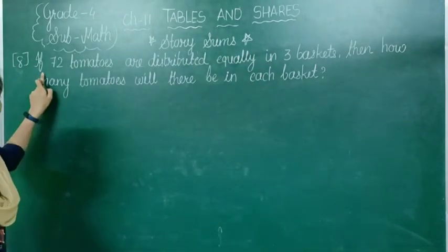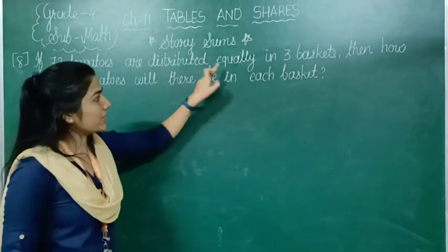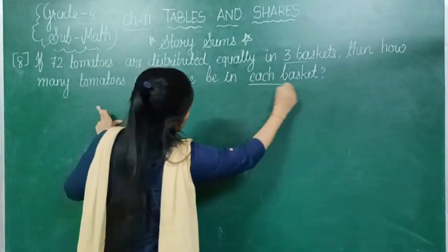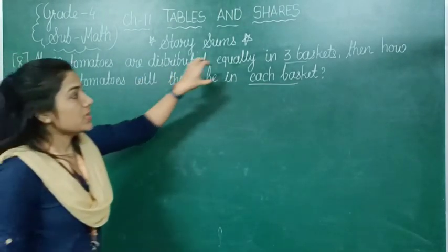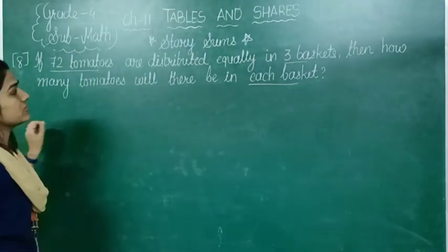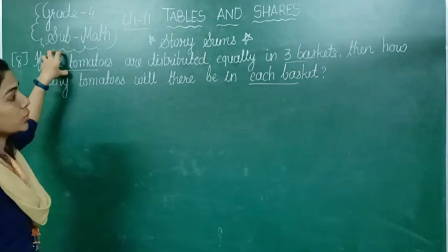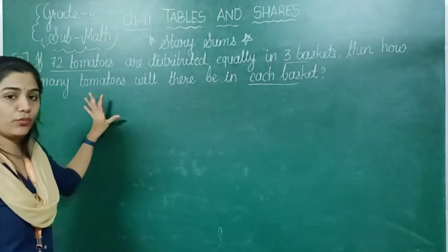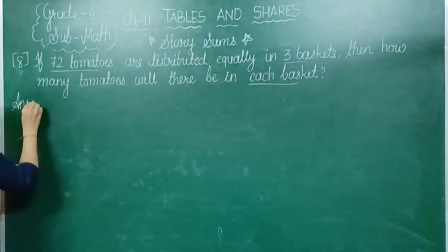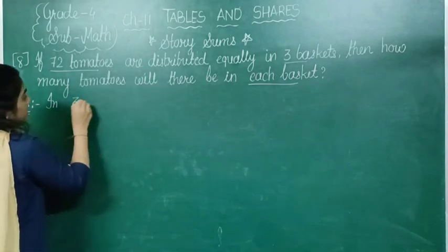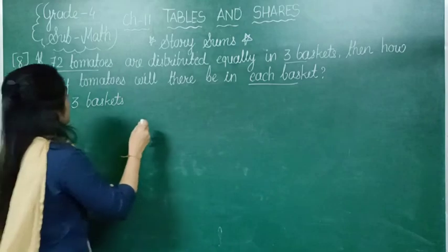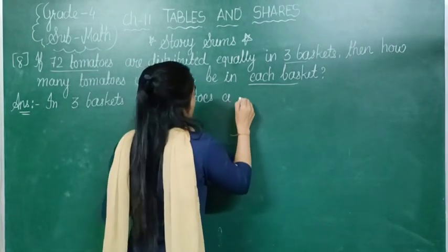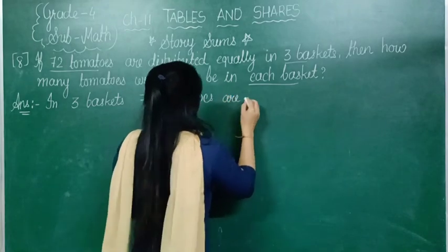Now we move to question number 8. If 72 tomatoes are distributed equally in 3 baskets, then how many tomatoes will be there in each basket? In this question, 72 tomatoes are distributed in 3 baskets, and we need to find how many tomatoes are in 1 basket. We write the statement: in 3 baskets, 72 tomatoes are distributed.